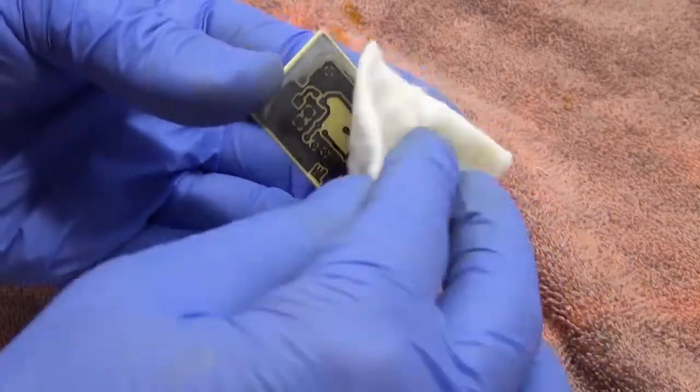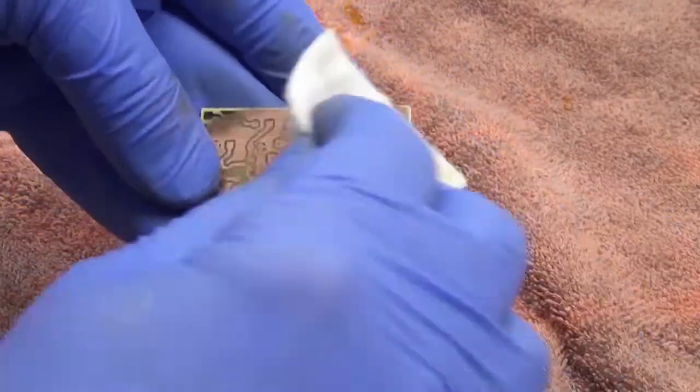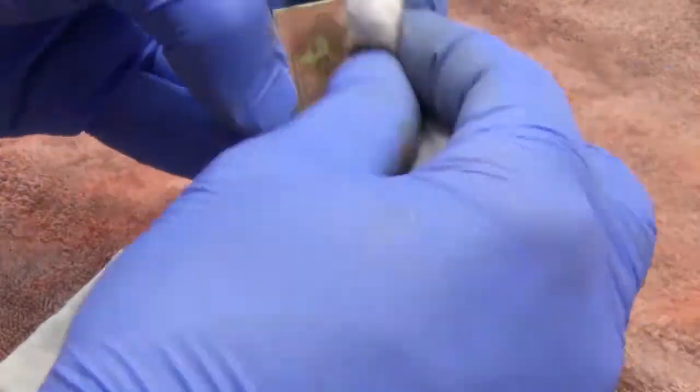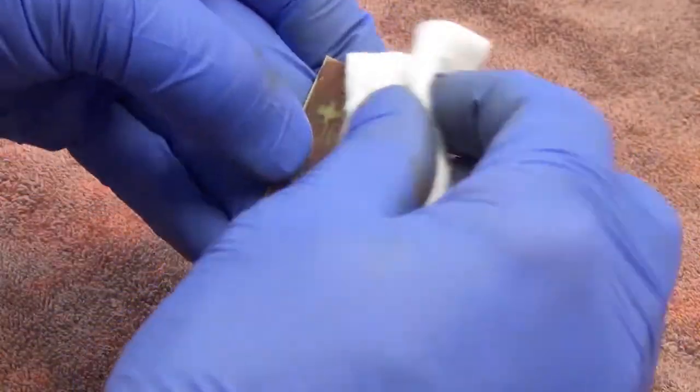Removing the toner from the board is real easy. I just use a little bit of acetone and it comes right off. There are other solvents that will work just as well, but I happen to have acetone, so that's what I use.